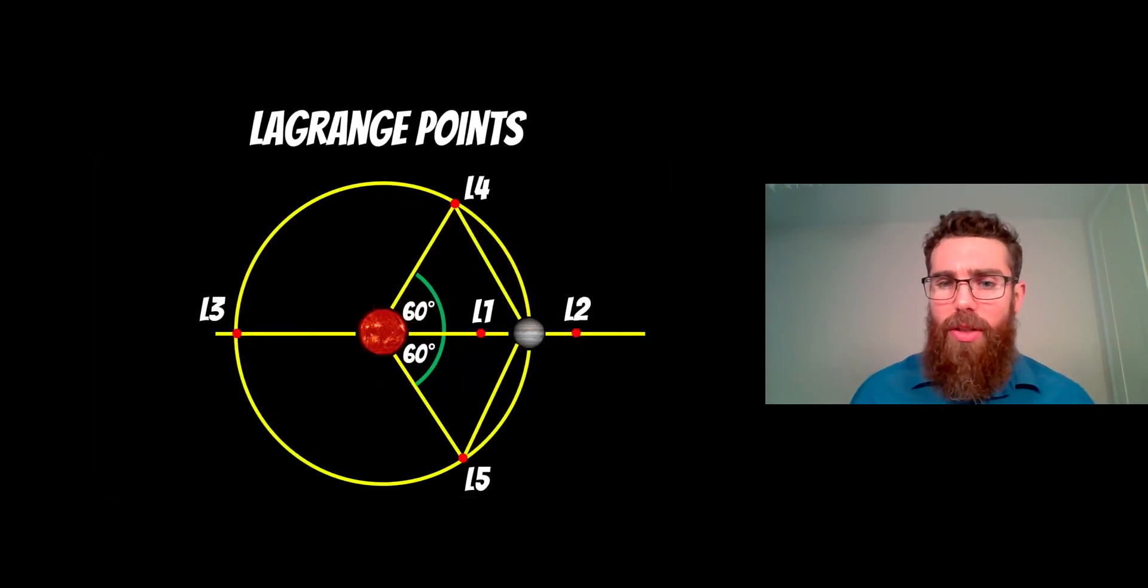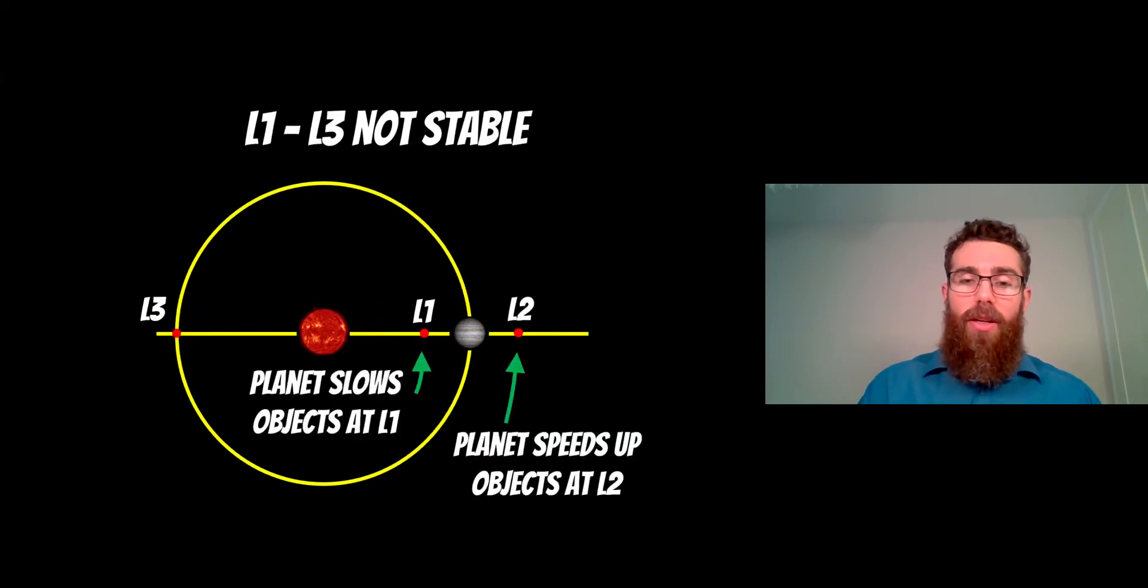The Lagrange points, if you're not familiar with these, there's five locations in a two-body system where you can basically place an object and they will happily stay there to some degree. It's where the gravitational forces from the two larger objects basically balance and work together with the centrifugal forces of an object at that location. You can essentially put an object there and it doesn't require any additional energy to orbit and stay in the same reference point as Jupiter orbits around the Sun.